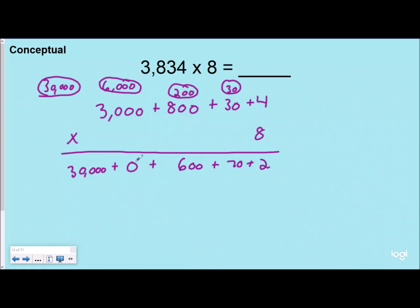So you have a 3 in the ten-thousands place, a 6 in the hundreds place, a 7 in the tens place, and a 2 in the ones place, and our product would be 30,672.